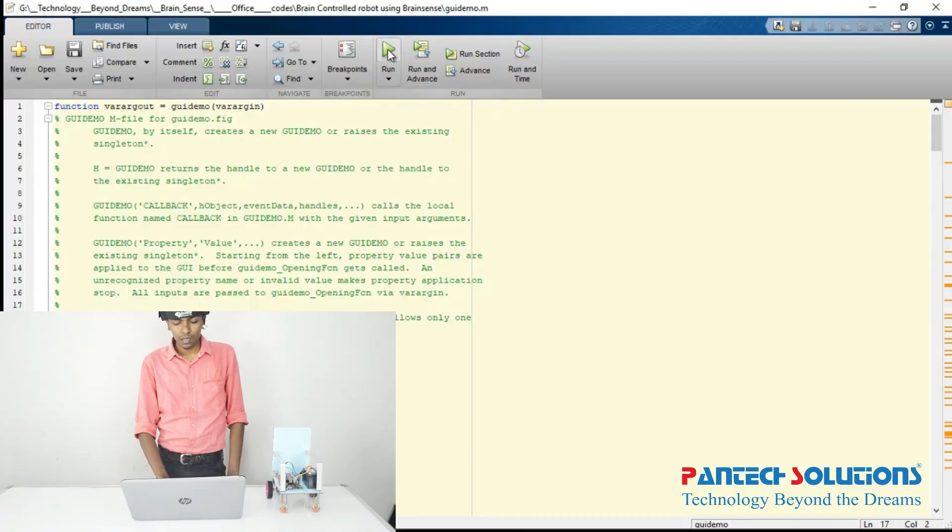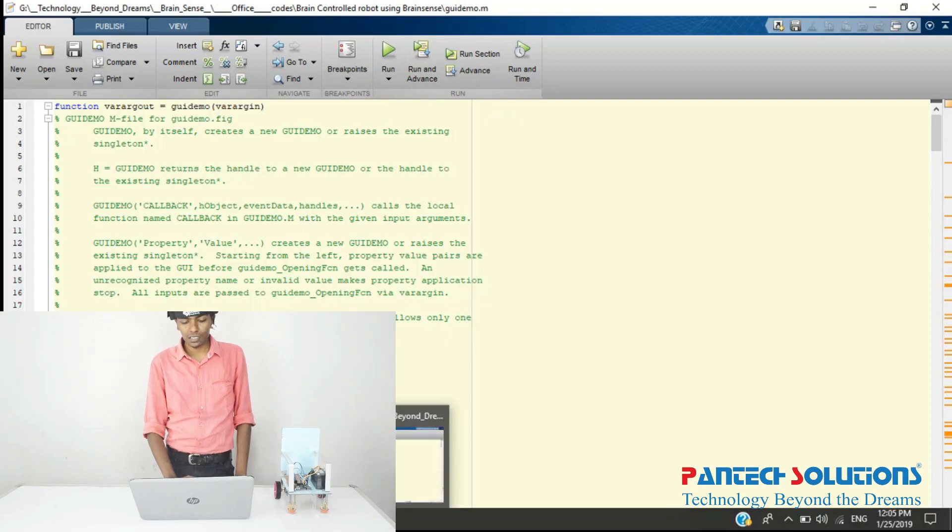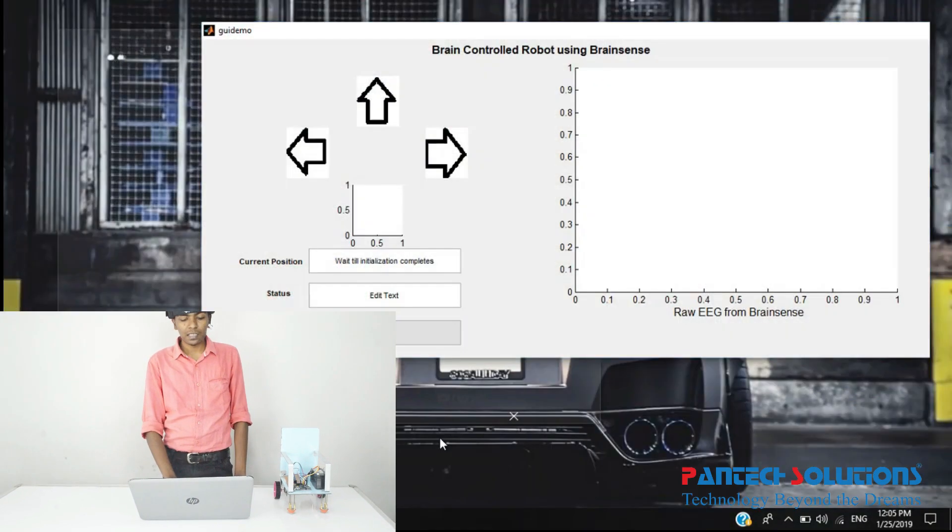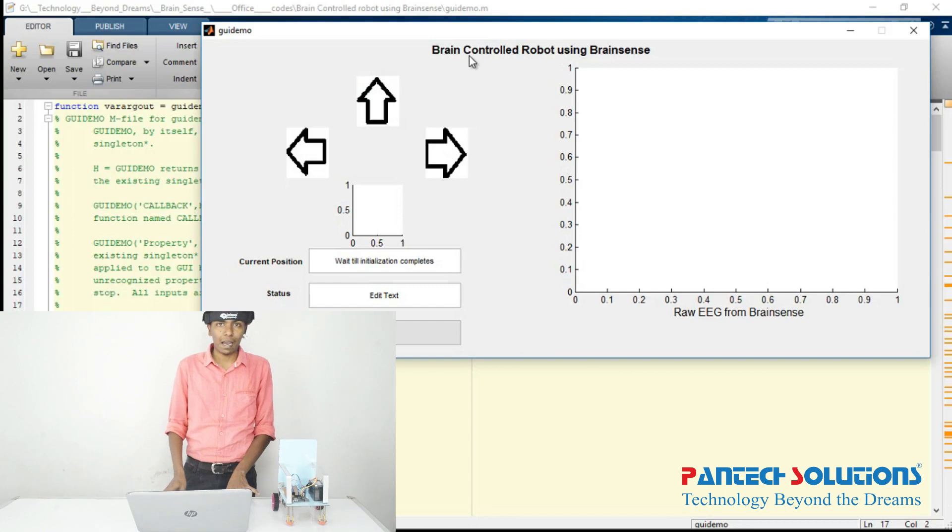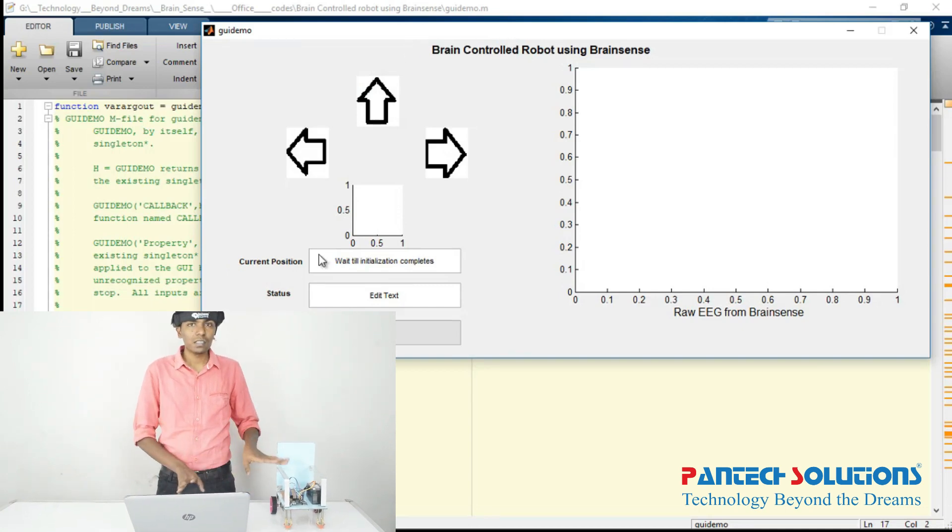First, in this GUI, we can show the initial direction. This is the time which is required for the laptop to be paired with the HC-05.